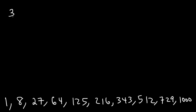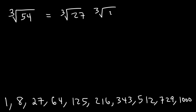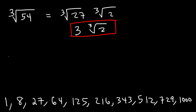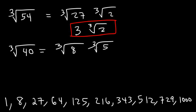Let's say we want to simplify the cube root of 54. We need to find a perfect cube that goes into 54, which is 27. 54 divided by 27 is 2, and the cube root of 27 is 3, so the answer is 3 times the cube root of 2. Now simplify the cube root of 40: the only perfect cube that goes into 40 is 8. 40 divided by 8 is 5, and the cube root of 8 is 2, so the answer is 2 cube root of 5.